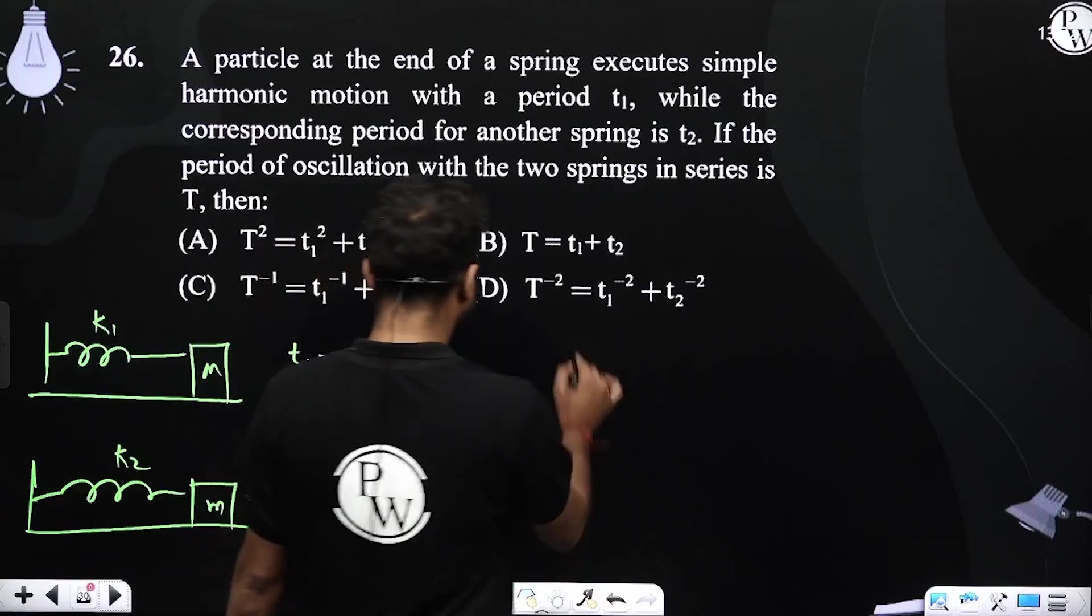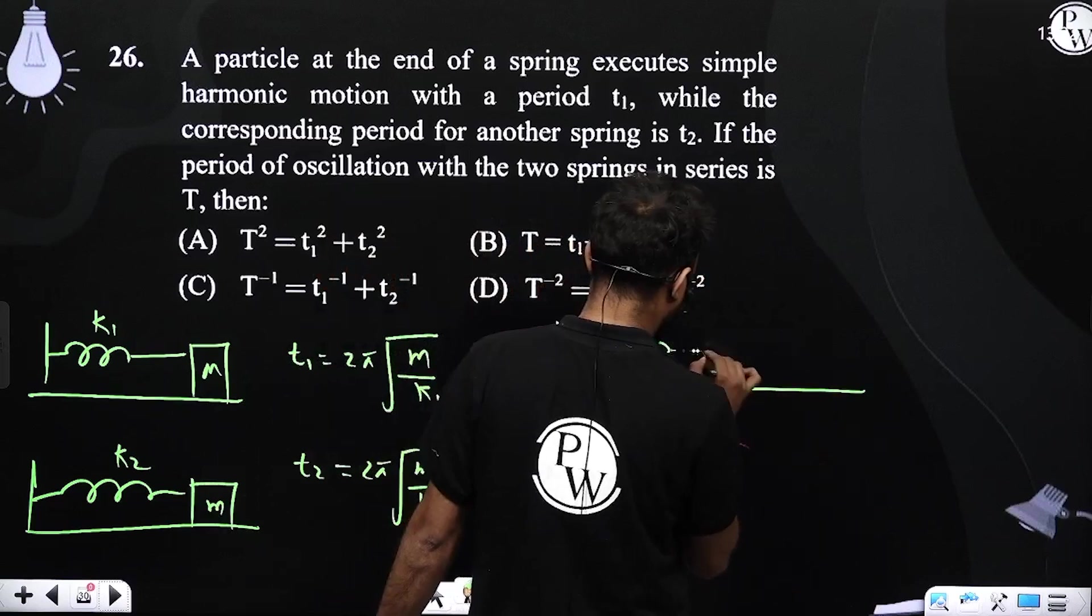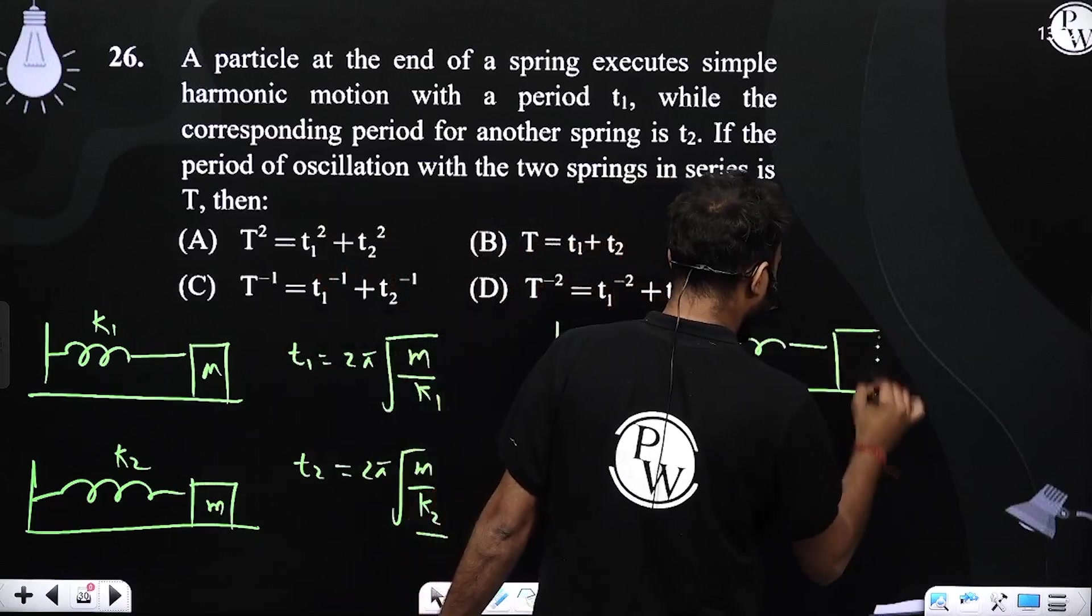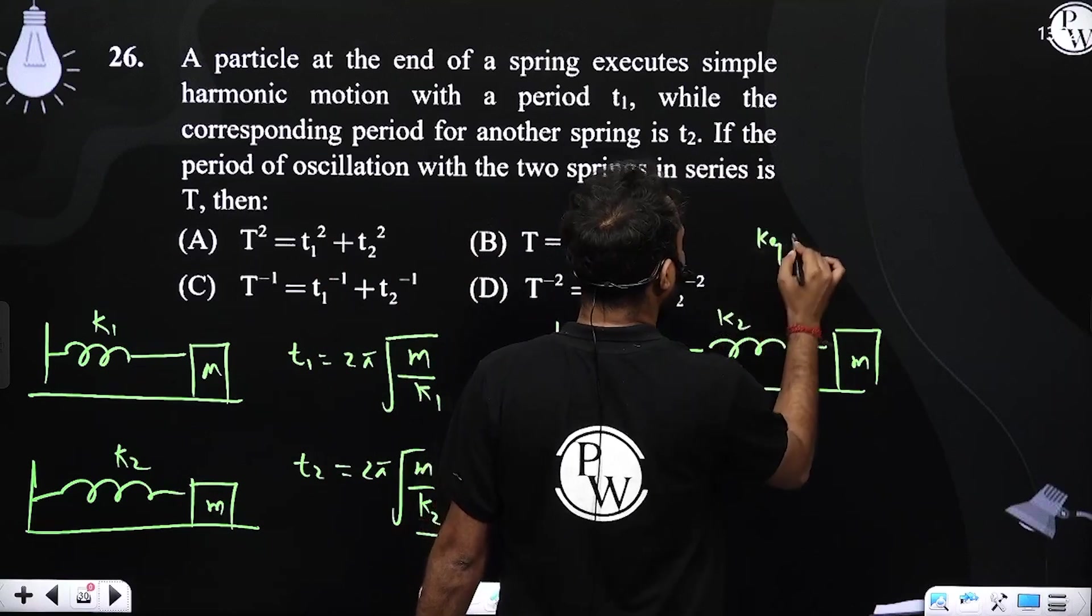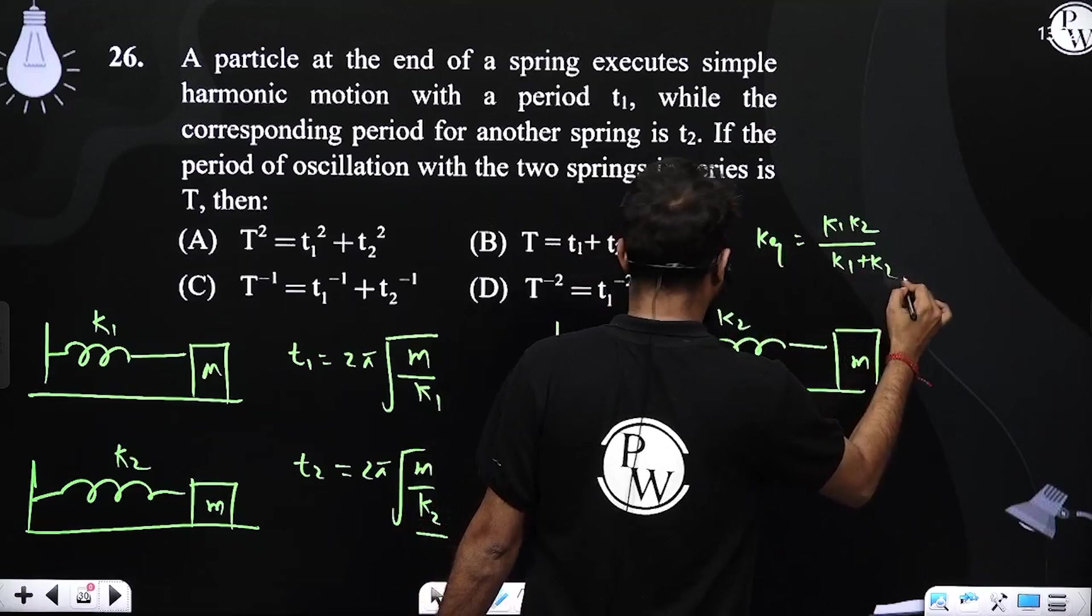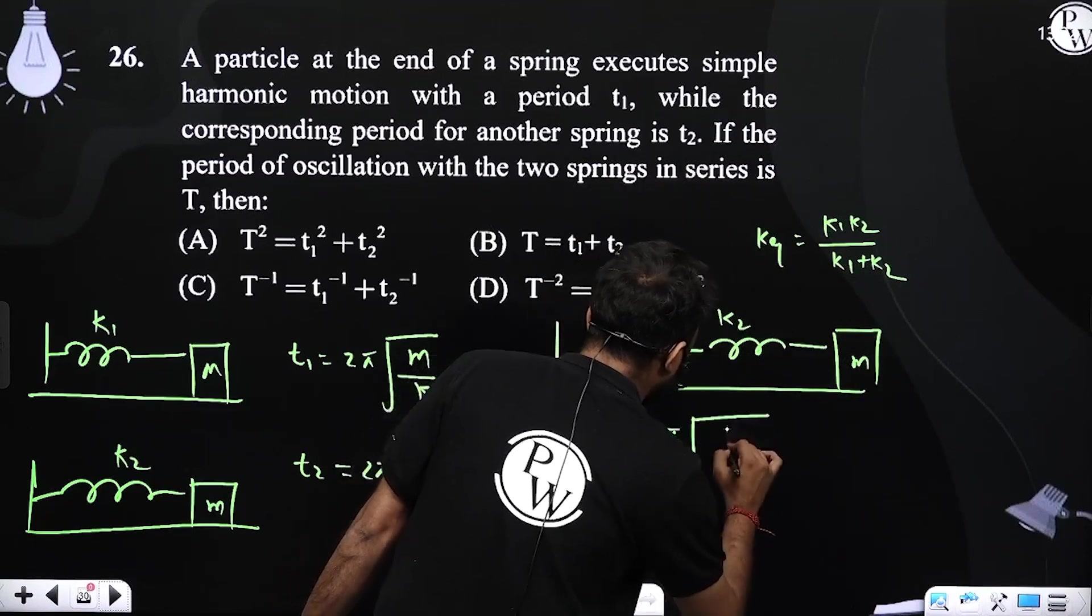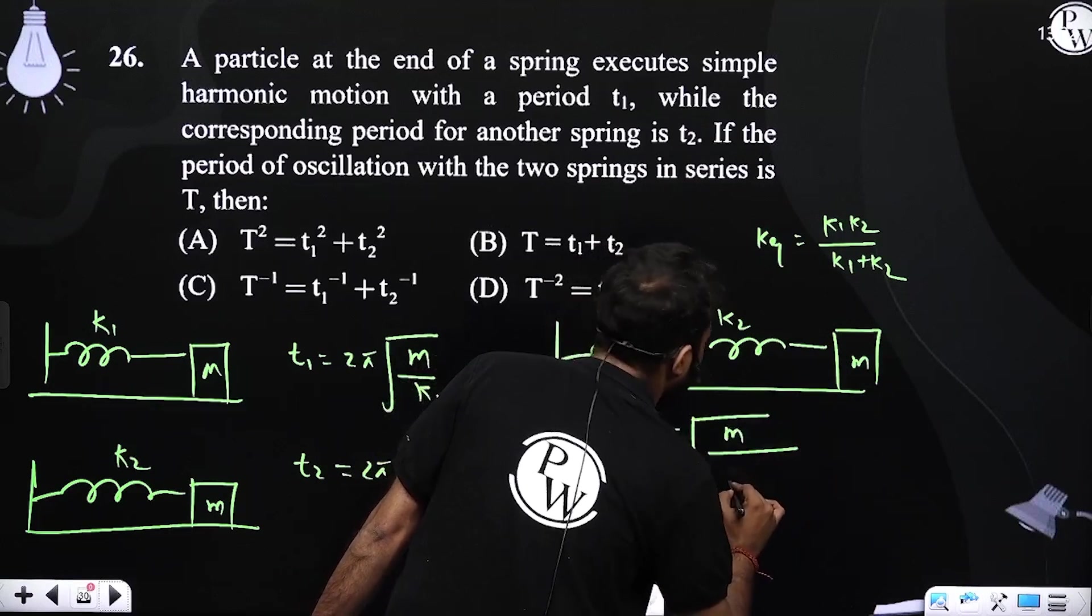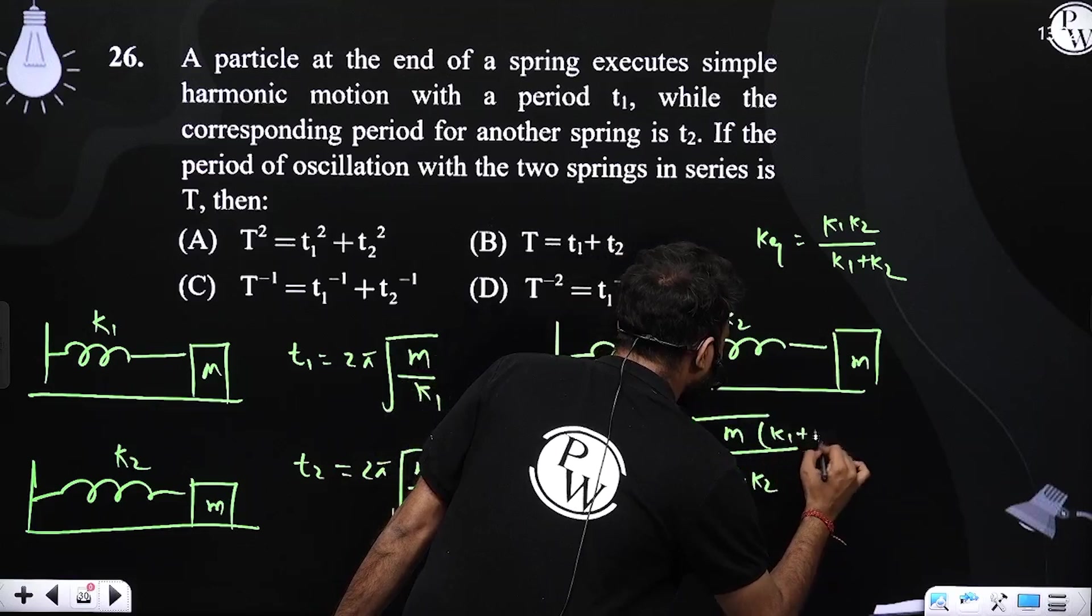The third case, we have both springs, we have connected to k1 and k2, so k equivalent will be k1 k2 upon k1 plus k2. So the new time period will be 2π under root of m upon k1 k2 into k1 plus k2.